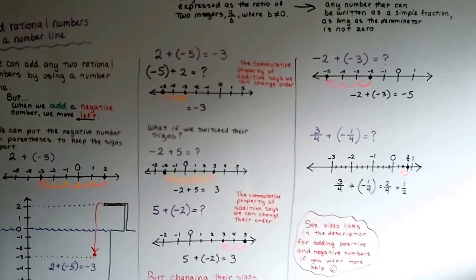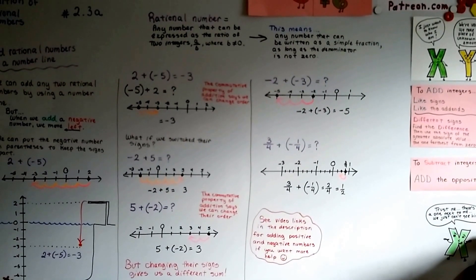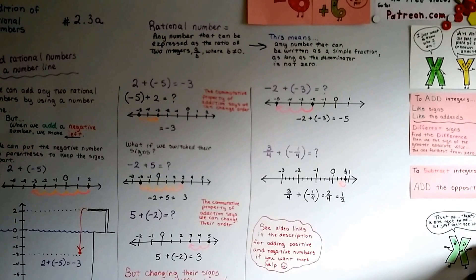So that's adding rational numbers on a number line. And what we're going to do in 2.3b is we're going to do it without the number line, and we're going to start talking about the rules. I'll see you there. Bye.